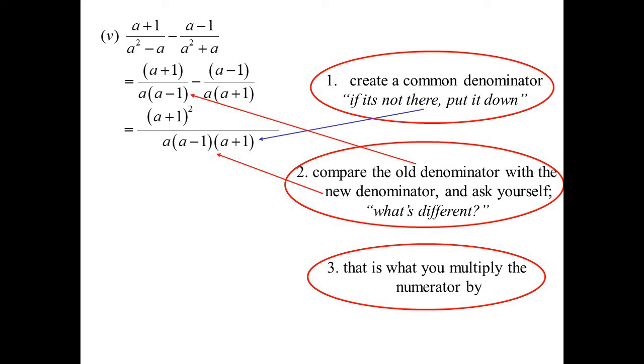Now, the second fraction. It was a, a plus 1. We want it to be a, a minus 1, a plus 1. What's different? So that's what we'll multiply the top by. Don't forget the minus sign, of course. Minus a minus 1 squared.